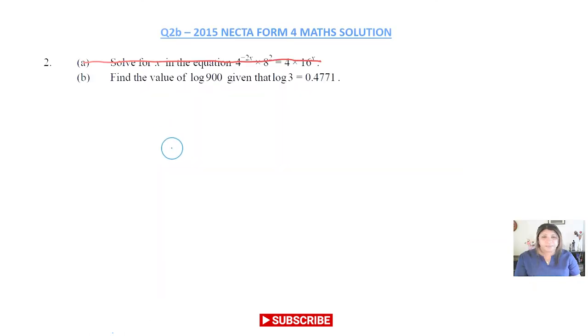2a has already been completed in my earlier videos. You will find it in my 2015 list as part of the solution for that paper. For 2b, we are asked to find the value of log 900 given that log 3 = 0.4771.